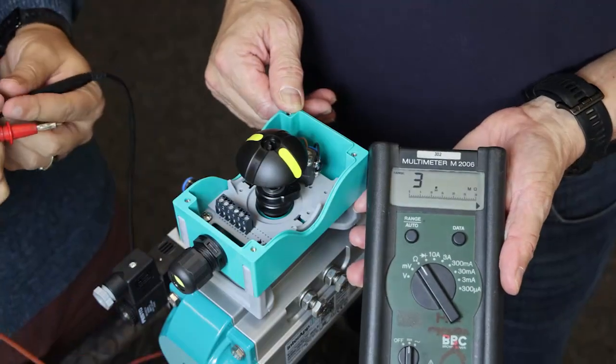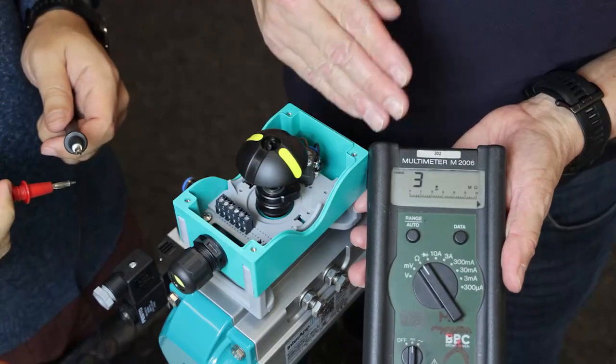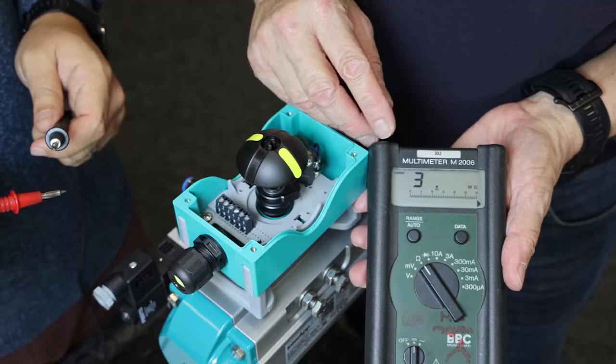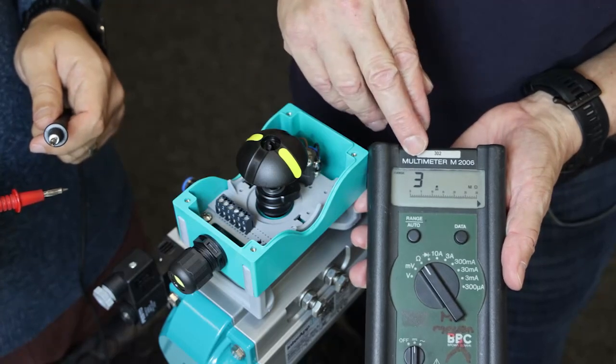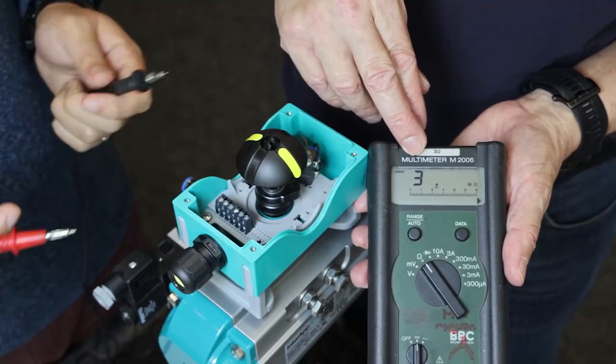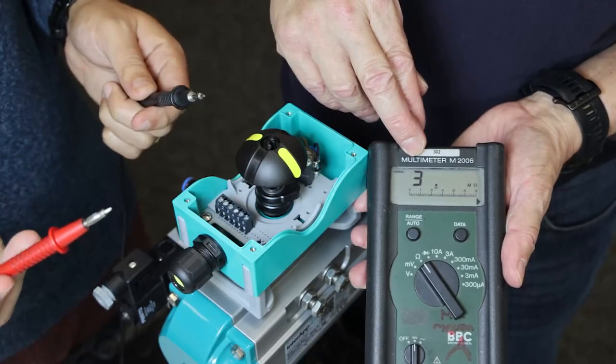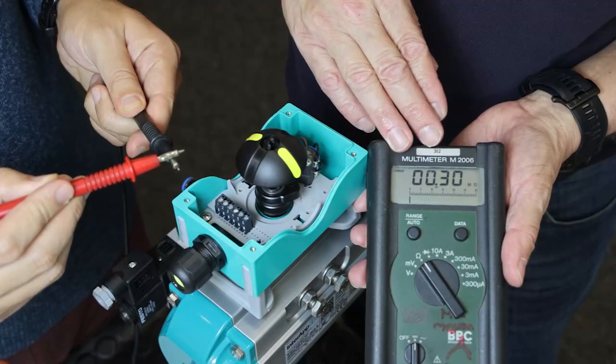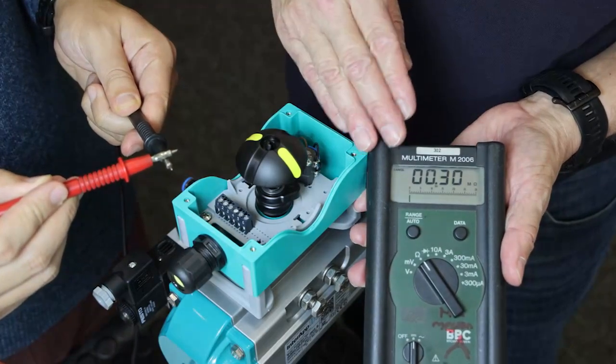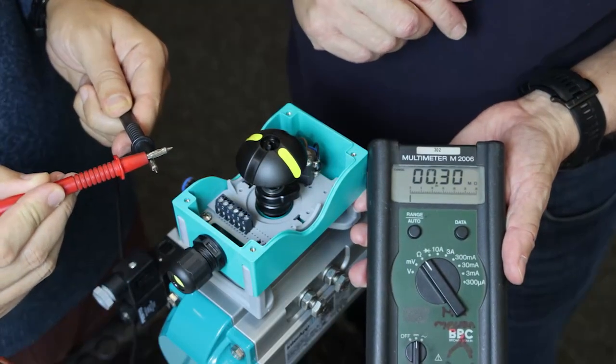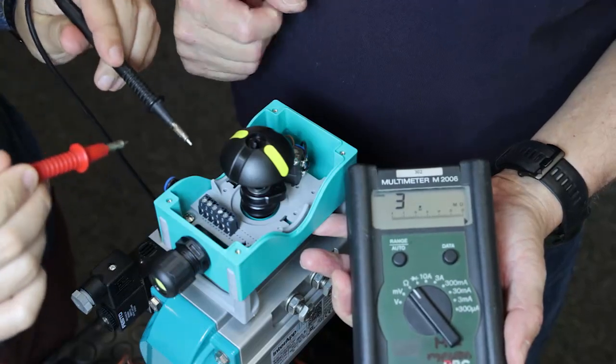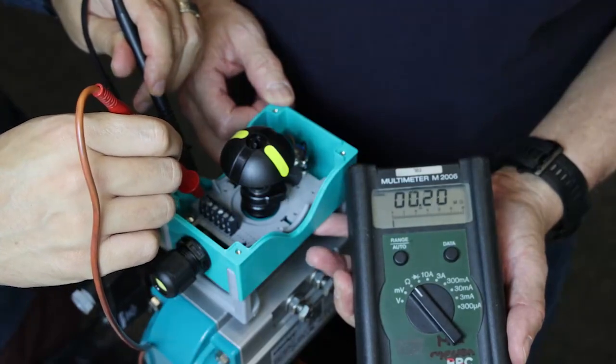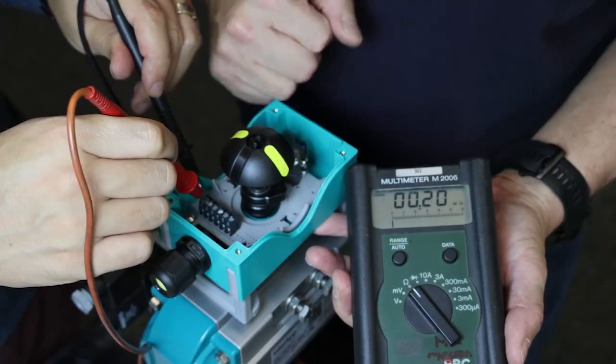To control the connectivity, we use a multimeter to measure the resistance. Here you see, we have a very high resistance which means we have no contact. When we connect both together, the resistance falls to zero and we have contact. Now we check on terminals one and two. We have connection for the closed position.